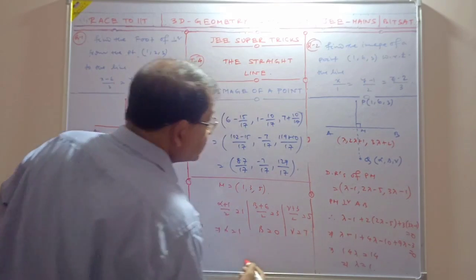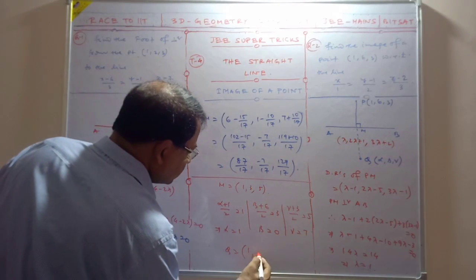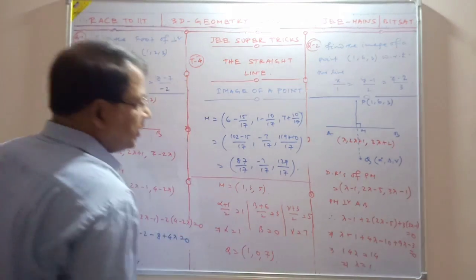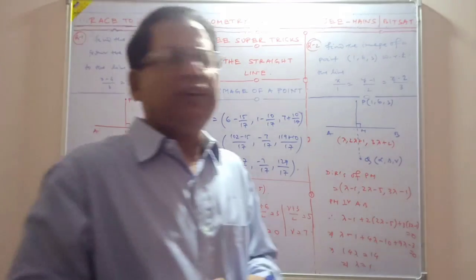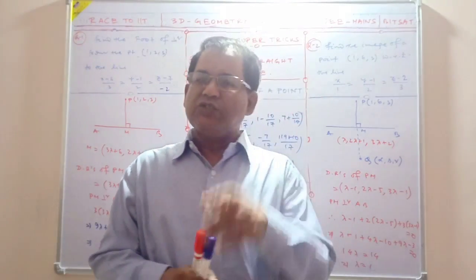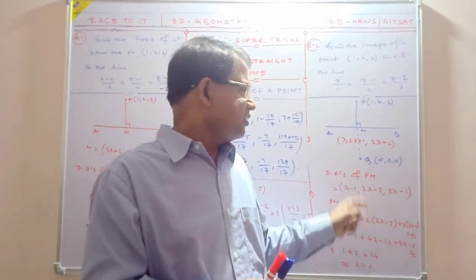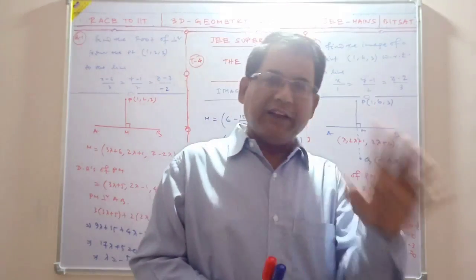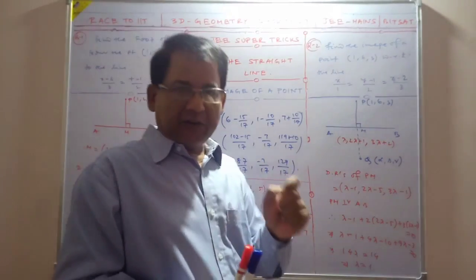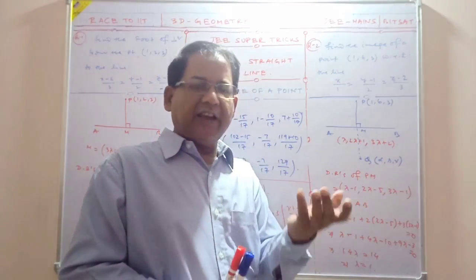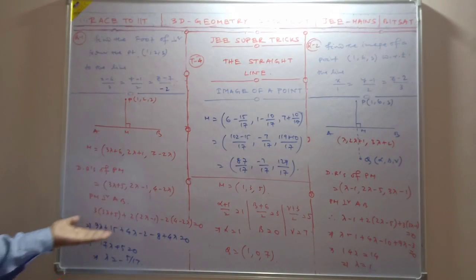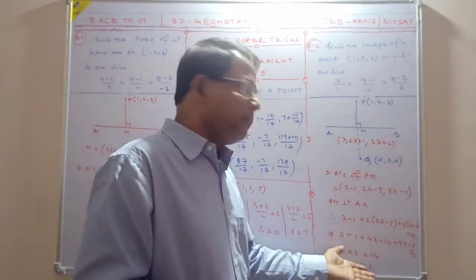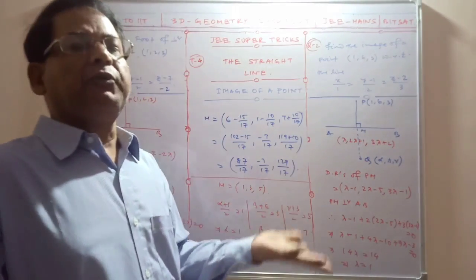So alpha value is 1, beta value is 0, and that is 7. So the image of the point with respect to the line is 1, 0, and 7.